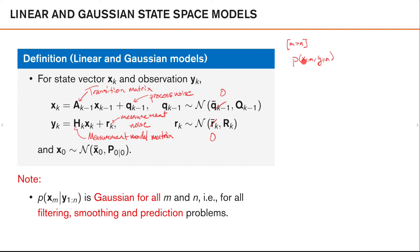And if we marginalize out everything here but x_m, it is still a Gaussian distribution. So marginalization doesn't change this.